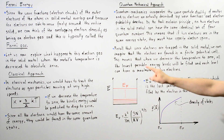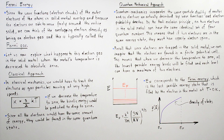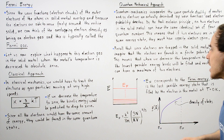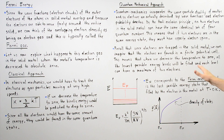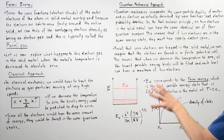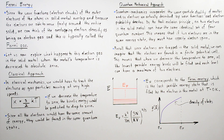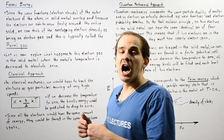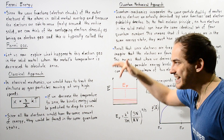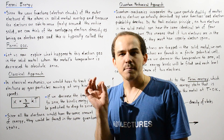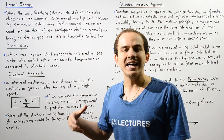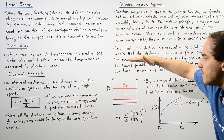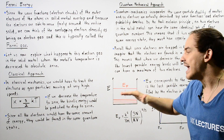Since electrons are trapped in the solid metal, we can imagine them inside a finite potential well, also known as a rigid box. This means that when we decrease the temperature of our solid system to absolute zero, all the lowest possible energy levels that electrons can take will be filled, with each level having a maximum of two electrons with opposite spins. Quantum mechanics tells us the electrons will not have an energy of zero; instead, every electron will drop down to the lowest possible energy states.